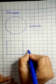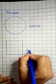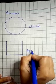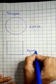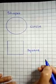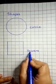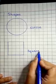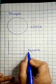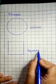So let's write down its spelling. S Q U A R E. Square. Say it. S Q U A R E. Square.